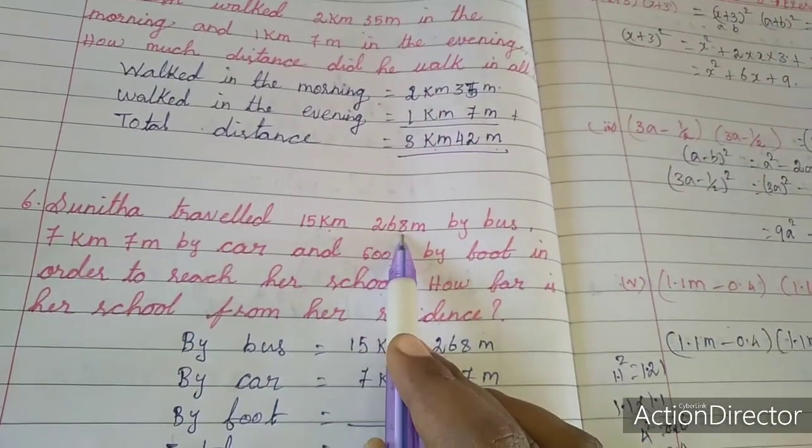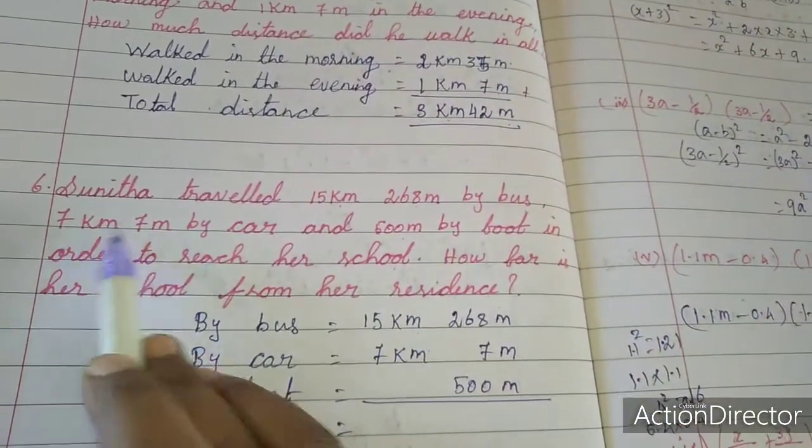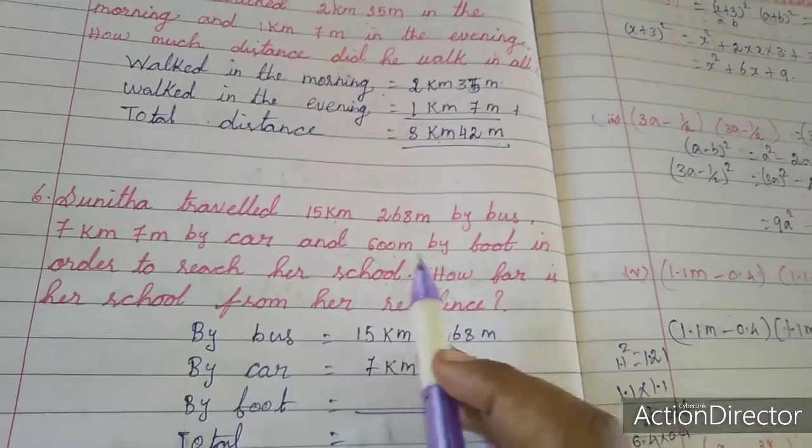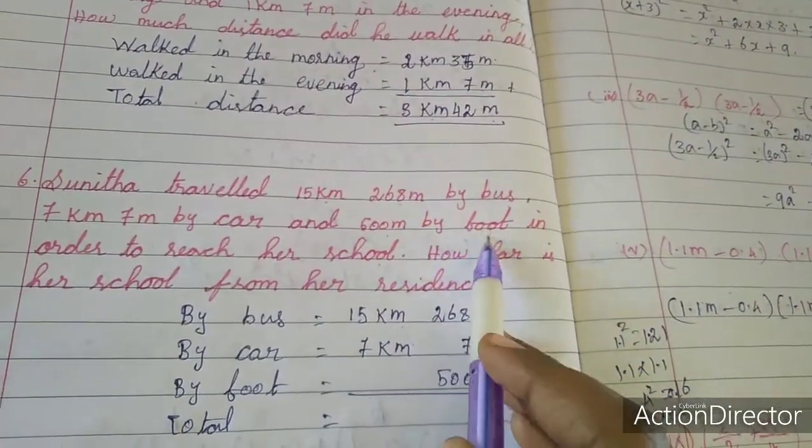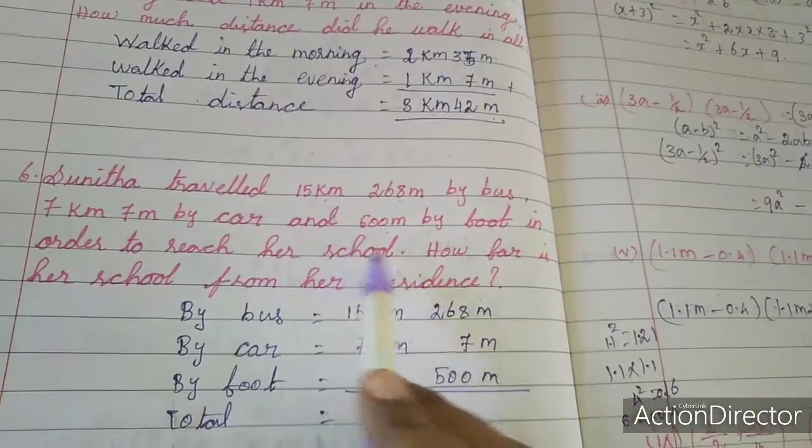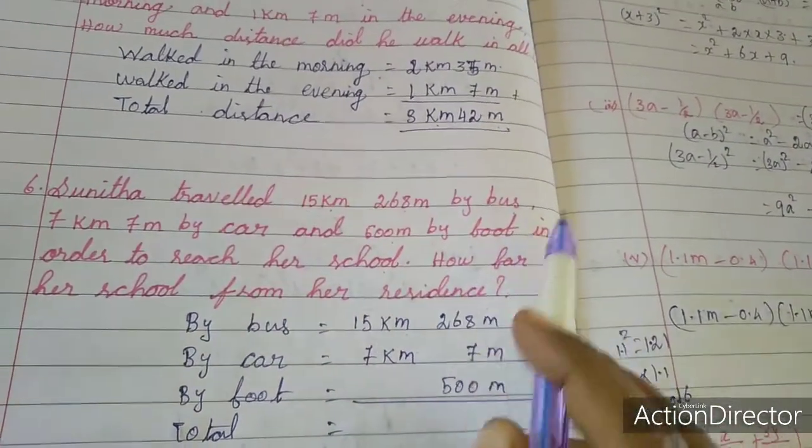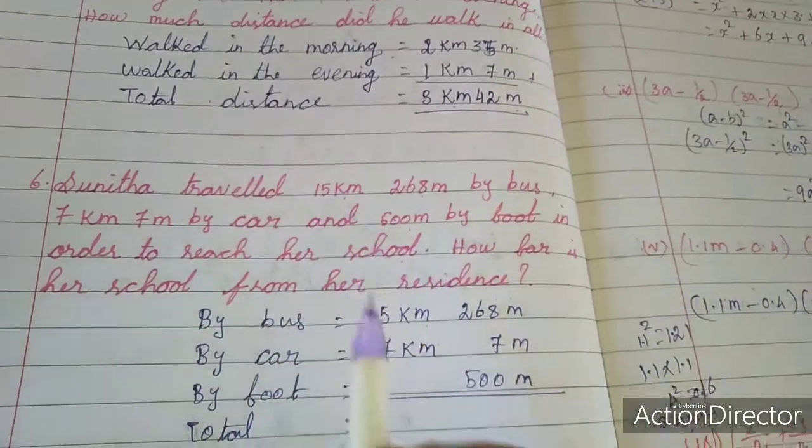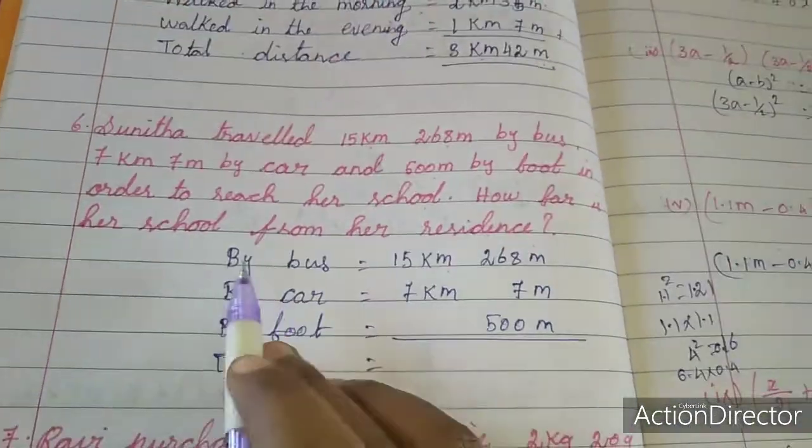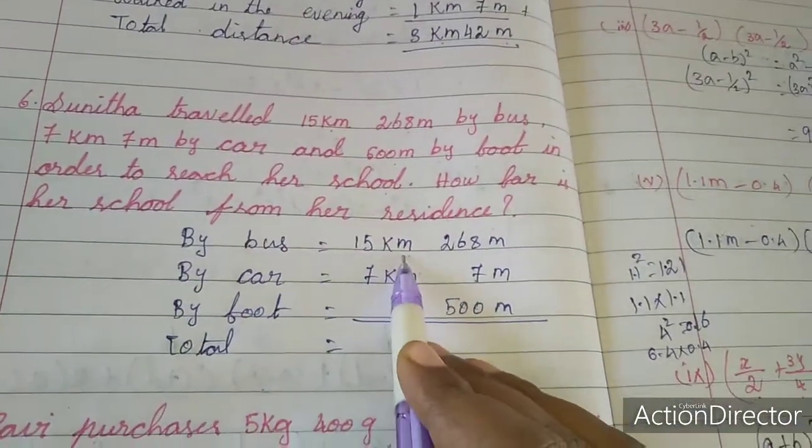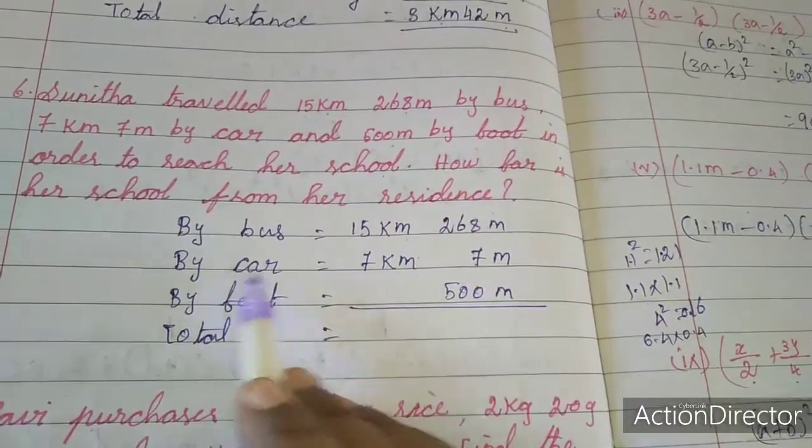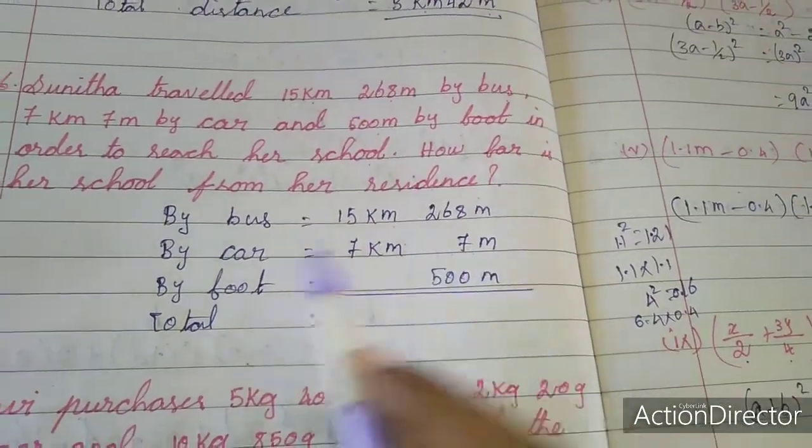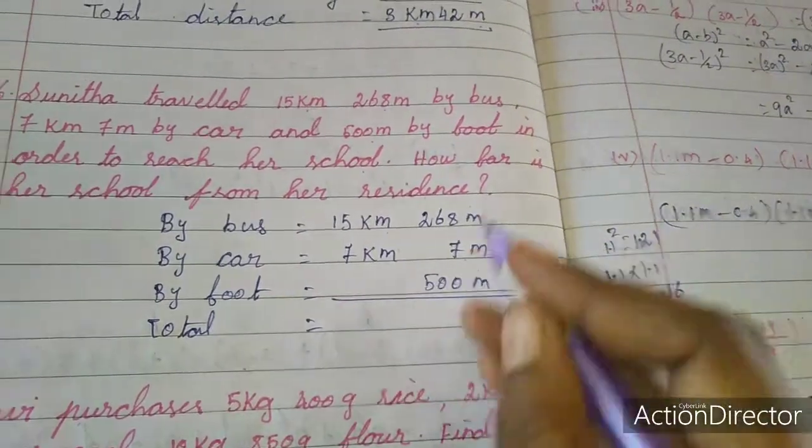She traveled 15 km 268 m by bus and 7 km 7 m by car and 500 m by foot in order to reach her school, so total distance means we have to add this. By bus equals 15 km 268 m, by car 7 km 7 m, by foot 500 m.